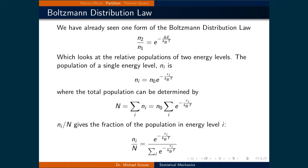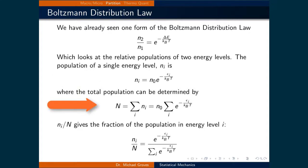This expression comes in other forms. For instance, the population of a single energy level, ni, is equal to n0 times e raised to the power of negative ei divided by the Boltzmann constant times the temperature, where ei is just the energy of a specific energy level. We can calculate the total population by taking the sum over ni, which equals n0 times the sum of e raised to the power of negative ei over kbT.